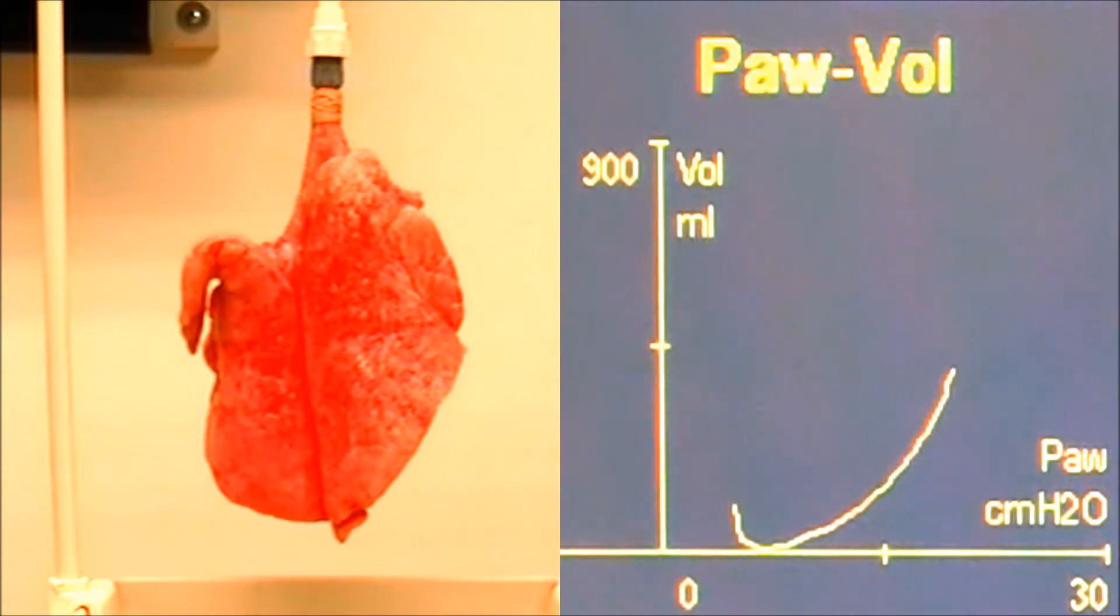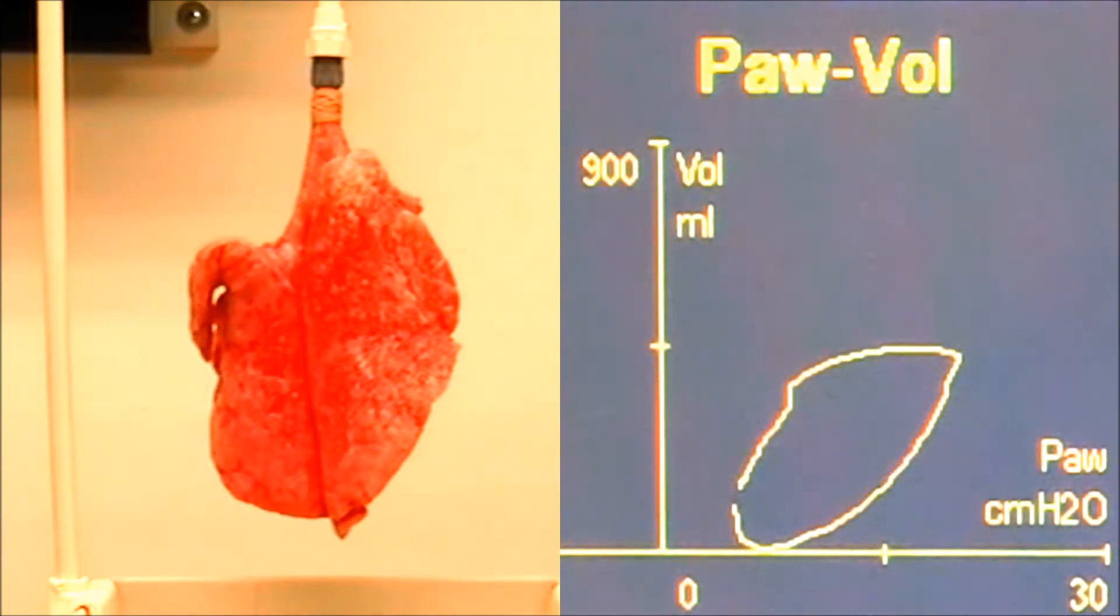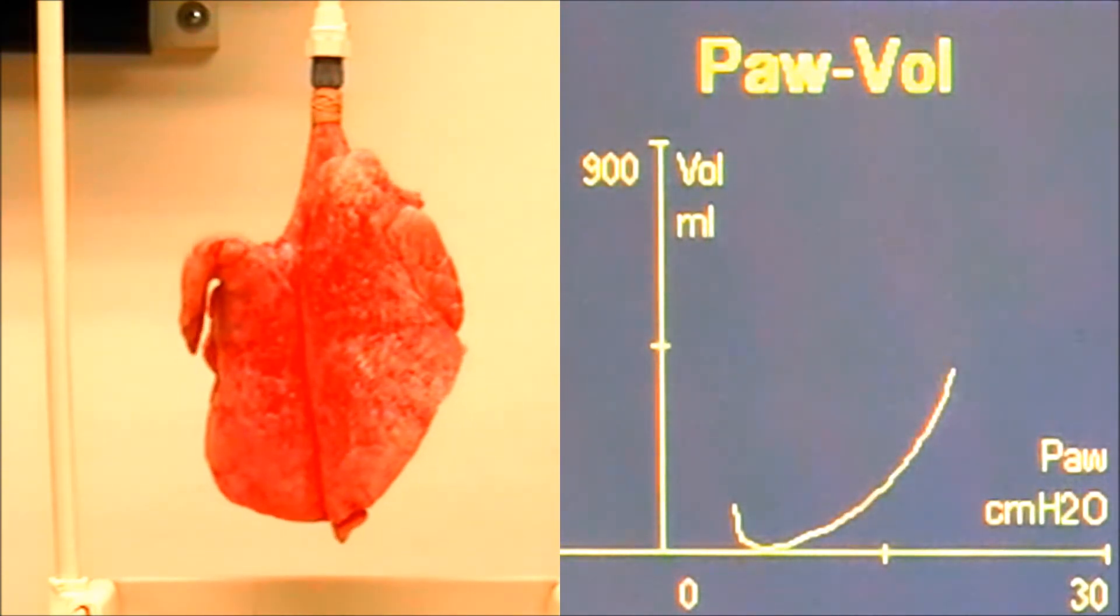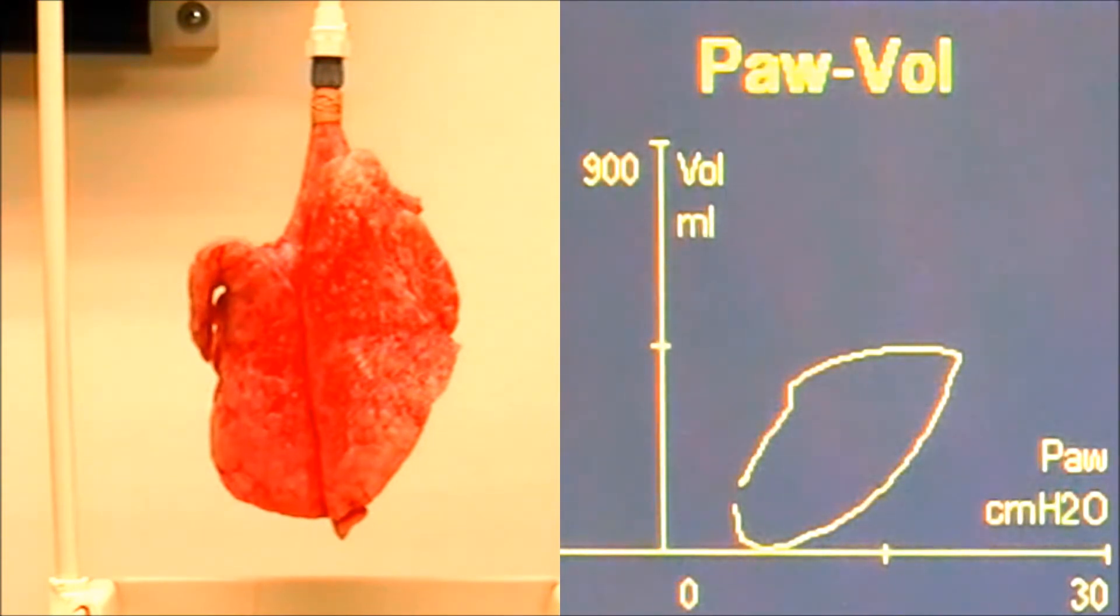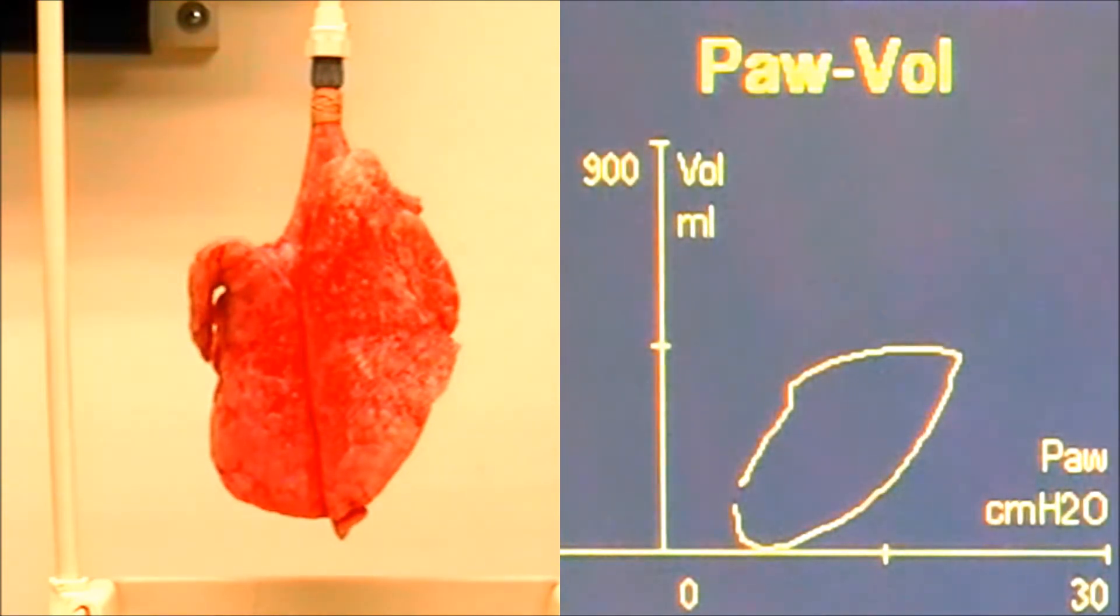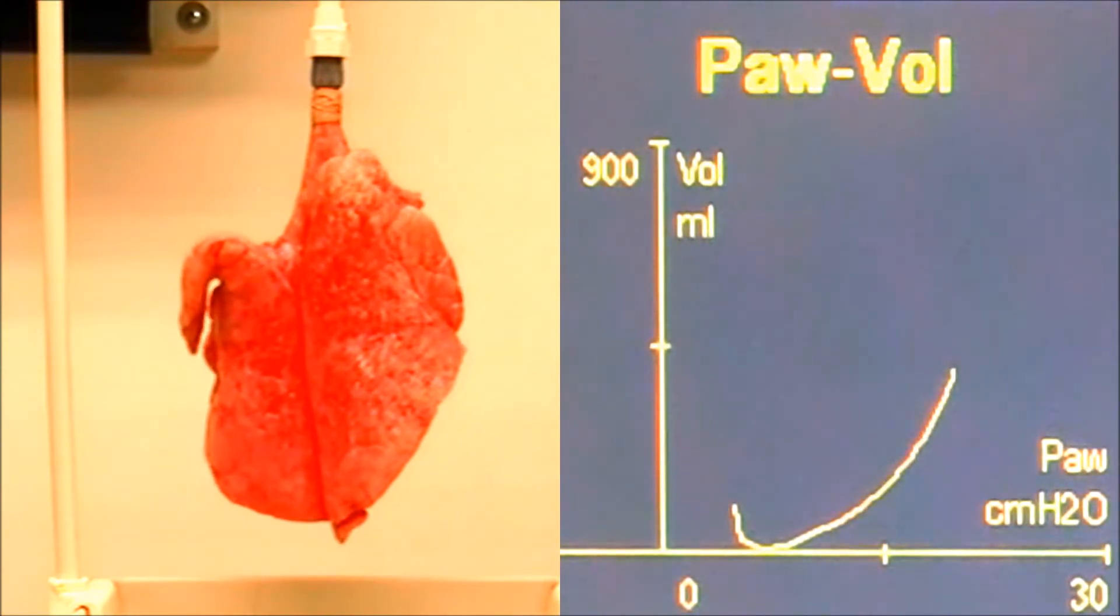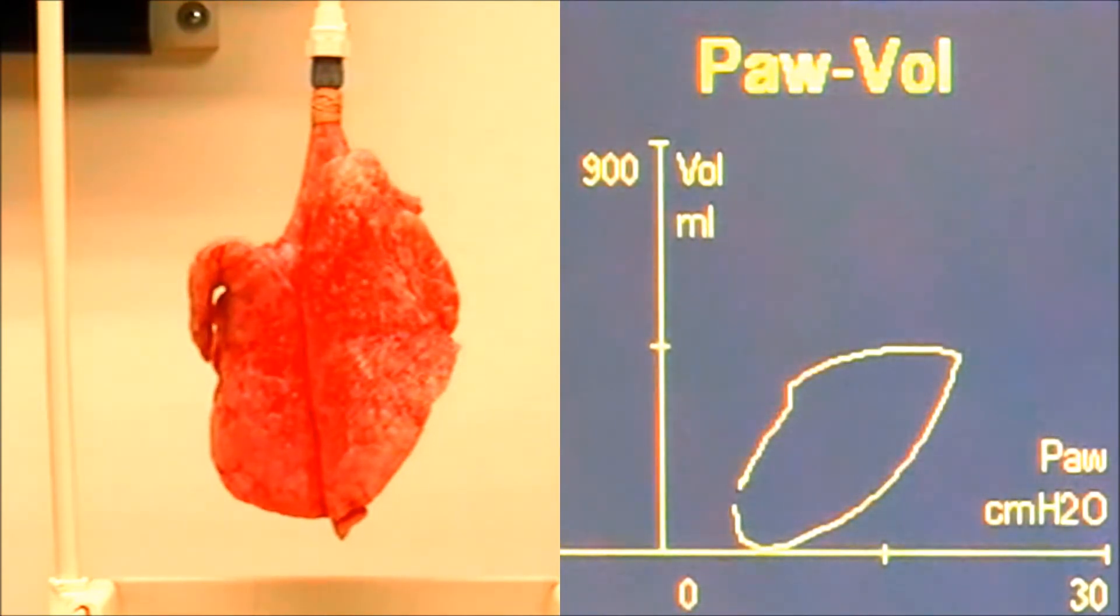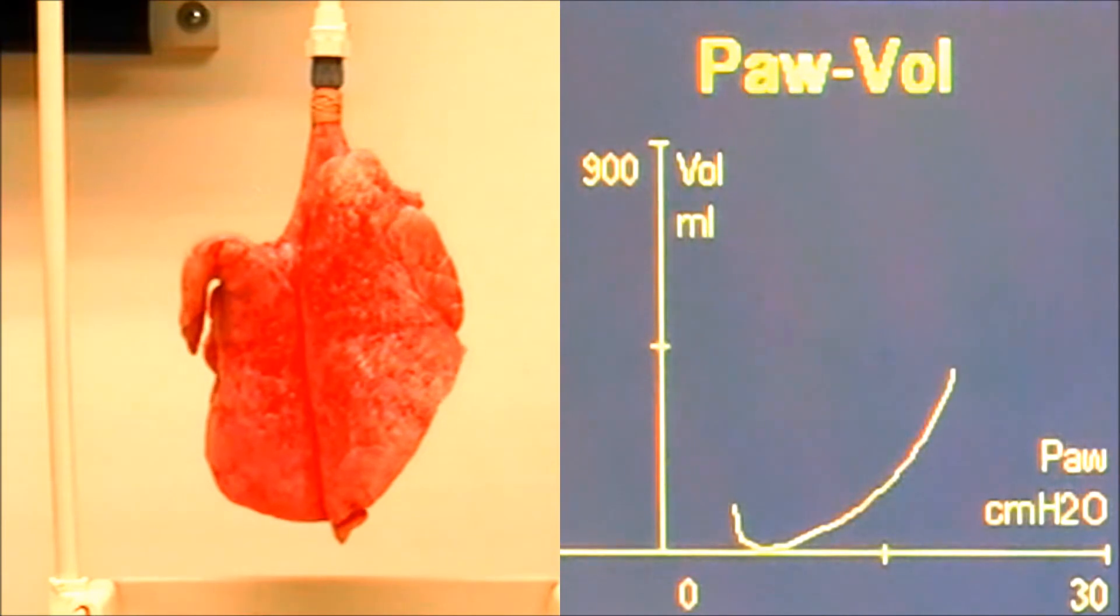We're going to show you how to do a sustained recruitment breath. The thing I want to point out is we're on five of PEEP right now. If I recruit and go back to five of PEEP, my recruitment breath didn't really do anything because I'm going to need more PEEP than I have now to keep my lung open. So we'll demonstrate that.